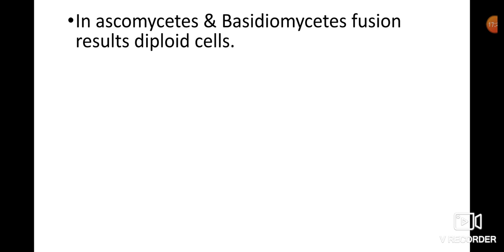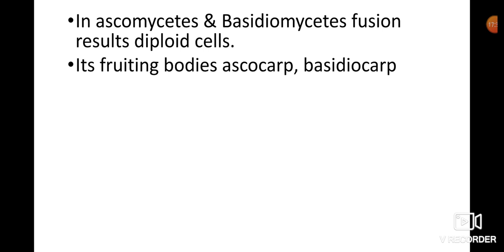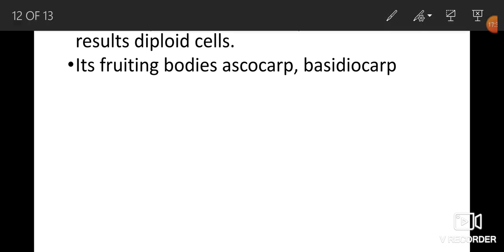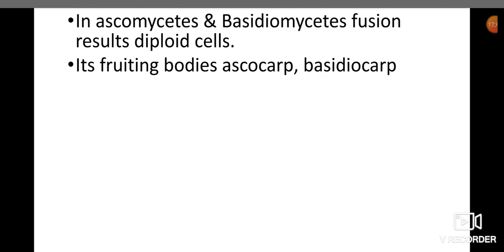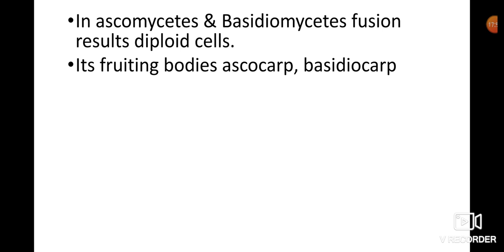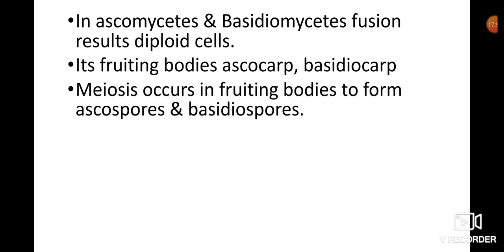In Ascomycetes and Basidiomycetes, fusion results in diploid cells. Their fruiting bodies are called ascocarp and basidiocarp respectively. Meiosis occurs in fruiting bodies to form ascospores and basidiospores.